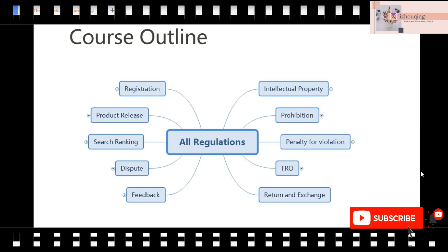So we can start this lesson now. All the regulations: the regulations about registration — how can you open a store on AliExpress — then the product release rules, what shall we do to release a perfect product to make it have a better ranking, and the searching ranking rules. Then we should learn the dispute rules and feedback rules. Meanwhile, intellectual property (IP rules) and the prohibition rules. If we are violating these rules, what is the penalty? Then we'll learn the TRO ban, which is a ban from the US court — a headache for many sellers — and finally the return and exchange rules.